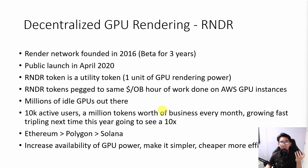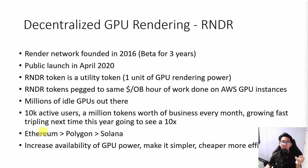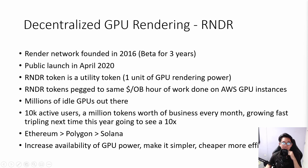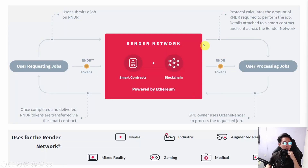They initially launched on Ethereum, then moved to Polygon, and have now indicated their planned intention to move to Solana, because there are a lot of problems with sidechains and Ethereum's high gas fees. They have determined that their high-performance code only Solana can deliver. The whole idea is to increase the availability of GPU power and make it cheaper and more efficient for artists, NFT creators, and game developers.